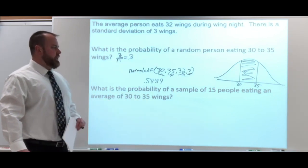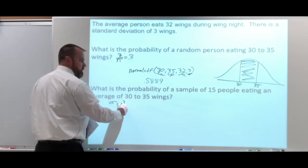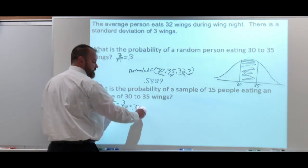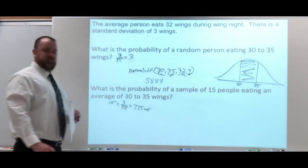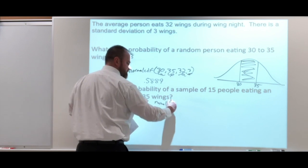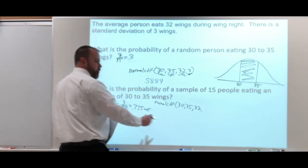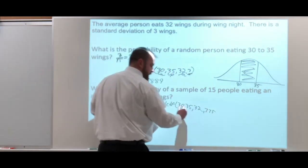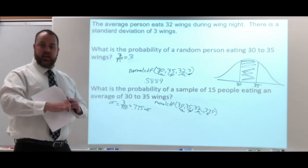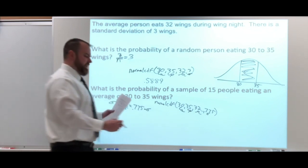Now if we're doing a sample of 15, we do have to calculate the new sigma. We're looking at three divided by the square root of 15, and that gives us a standard deviation of 0.775. So the formula is the same — normal CDF — with lower bound 30, upper bound 35, average of 32, and sigma of 0.775. The standard deviation is getting much smaller, going from 3 to 0.775. The proportion this time is 0.995.